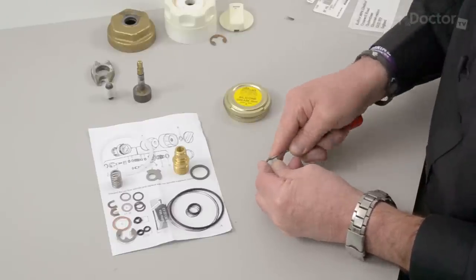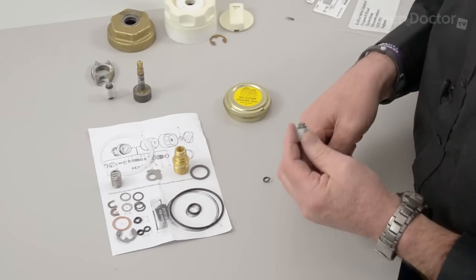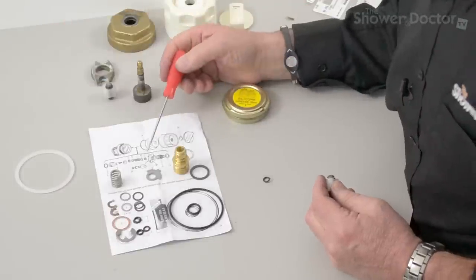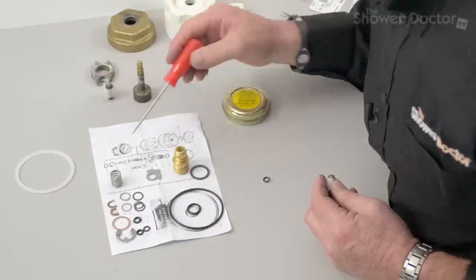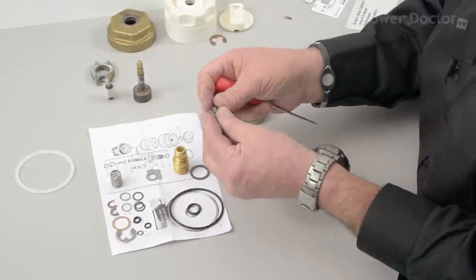There we go. That's it. These are the pistons here and what they need is seal D, and these are seal D here. There we go. Pop that one there.